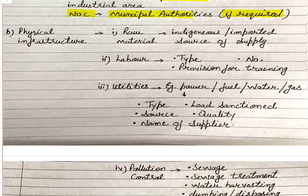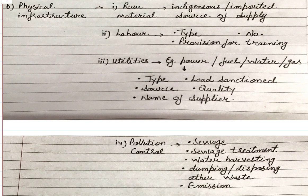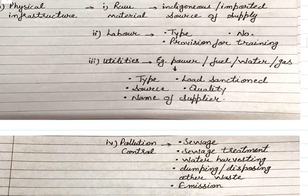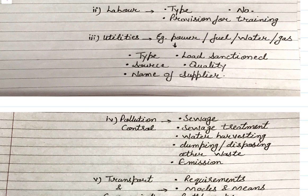Next under physical infrastructure is labor — what type of labor is required (skilled, unskilled, or professional), how many are needed, what quality and quantity is required, and what provisions exist for training. If specialized training is needed before a person can be put on a particular job, that should be mentioned. Then come utilities — meaning power, fuel, water, and gas. You need to specify what type of utility is required, and how much load needs to be sanctioned, because for commercial use a separate connection is required. Residential electricity and water supply cannot be used for commercial purposes.